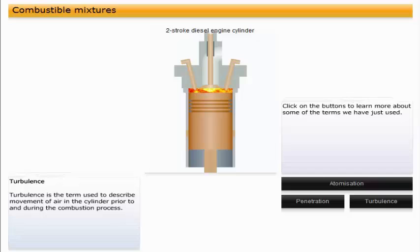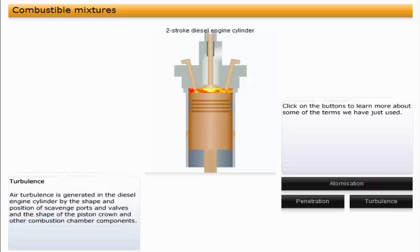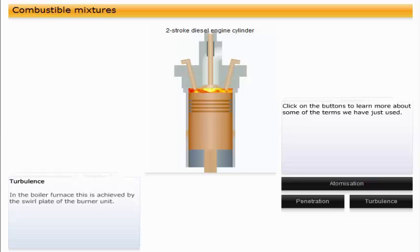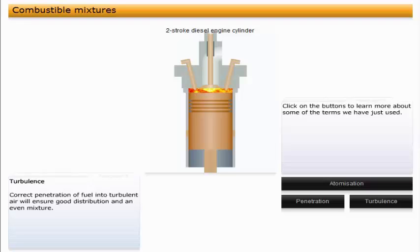Turbulence is the term used to describe movement of air in the cylinder prior to and during the combustion process. The movement has to be predictable if correct mixing of air and fuel is to be achieved. Air turbulence is generated in the diesel engine cylinder by the shape and position of scavenge ports and valves, and the shape of the piston crown and other combustion chamber components. In the boiler furnace this is achieved by the swirl plate of the burner unit. Correct penetration of fuel into turbulent air will ensure good distribution and an even mixture.